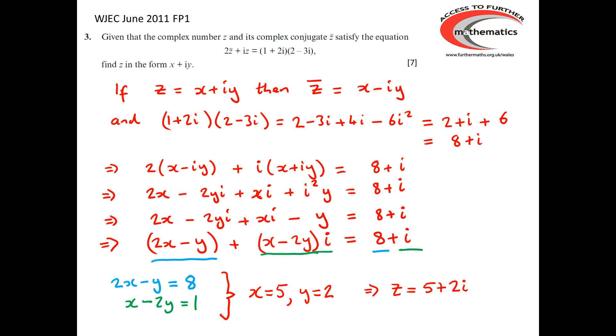Finally, we must consider the mark scheme for this question. The first two marks were for correctly calculating (1 + 2i) times (2 - 3i). We then had a method mark for making use of the fact that z-bar was x - iy and writing down this equation here. That's the idea that 2 lots of (x - iy) + i lots of (x + iy) equals 8 + i. There were then two method marks for obtaining the simultaneous equations.